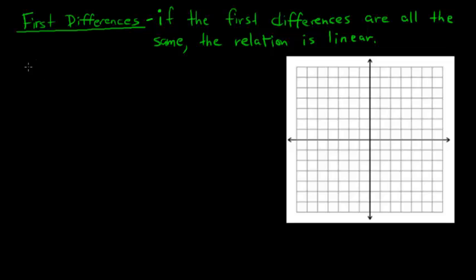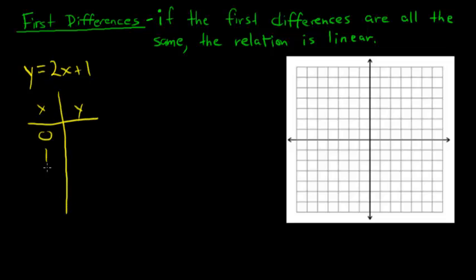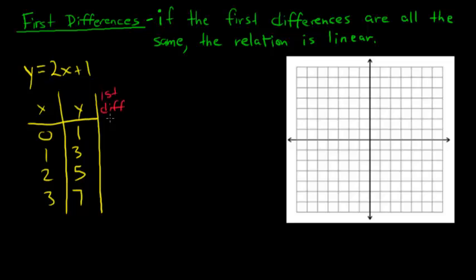So let's say we've figured out that a relation is linear. We've done a table of values for y equals 2x plus 1, and found it is linear — let's double-check. For x = 0, 1, 2, 3: the y values are 1, 3, 5, 7. The first differences are all 2, 2, and 2 — all the same — so the relation is linear.